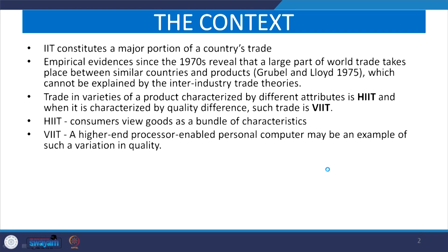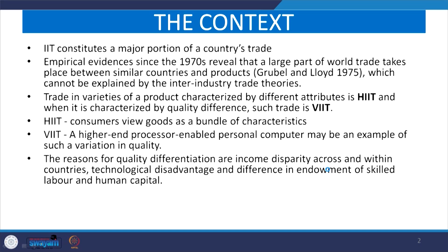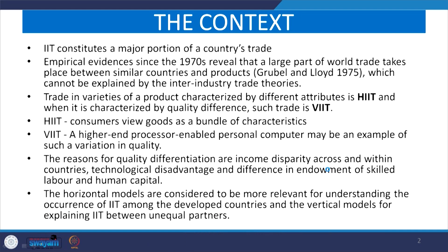One example is the personal computer industry, where we have different varieties of processors enabled in a single product line. Even personal computers vary by quality because of the quality of processors enabled in each unit. Quality preference or quality differences across countries may be largely corroborated by income disparities among or within countries, technological advantages or disadvantages, and differences in endowments of skilled labor or human capital.